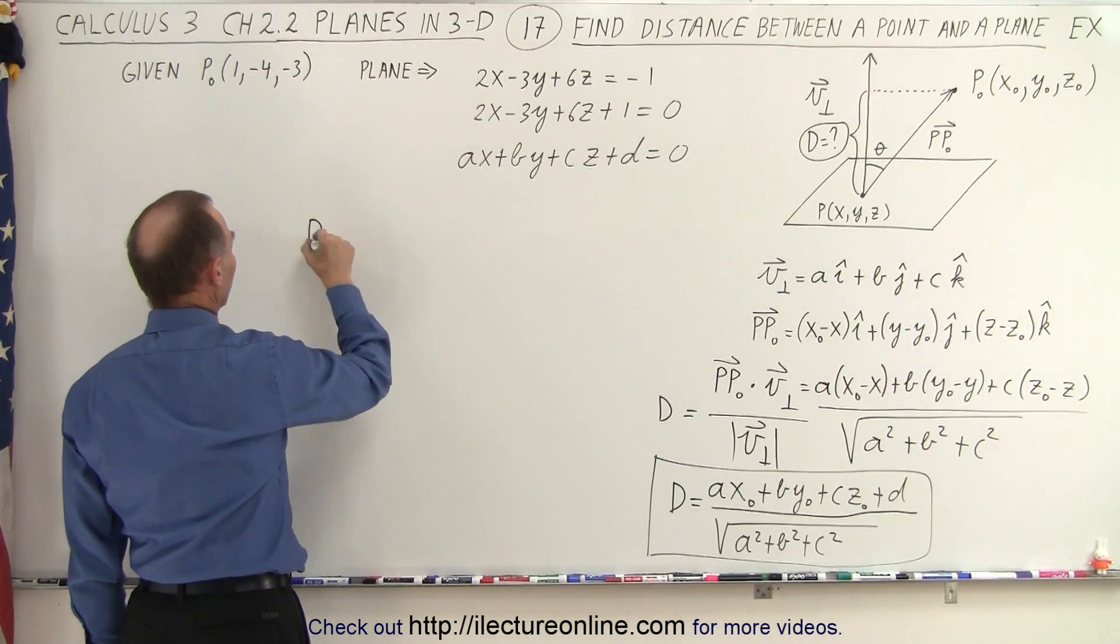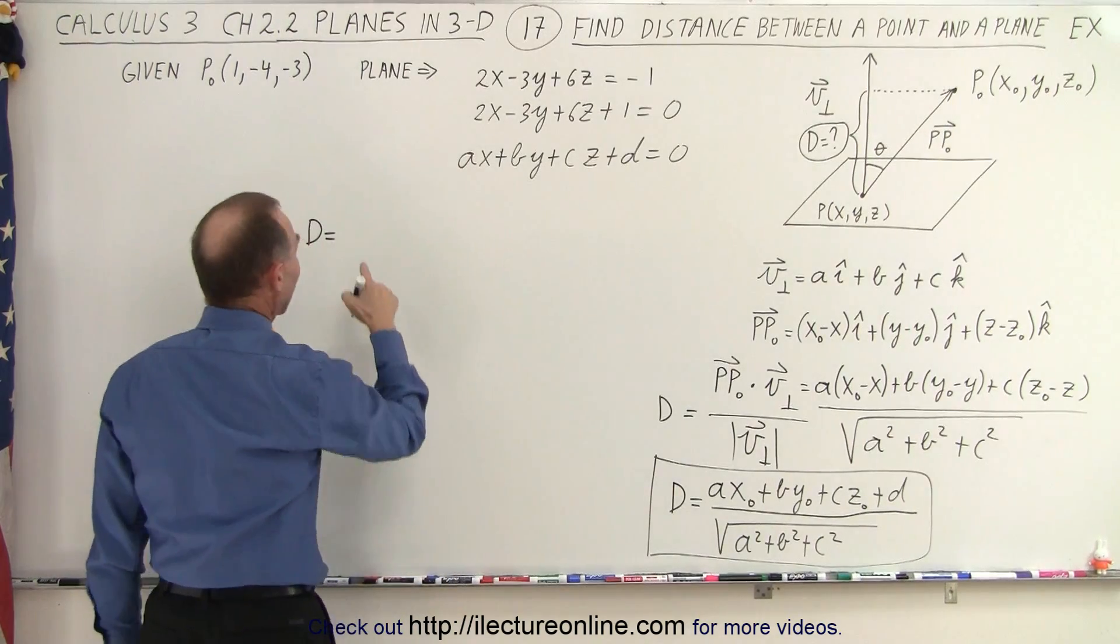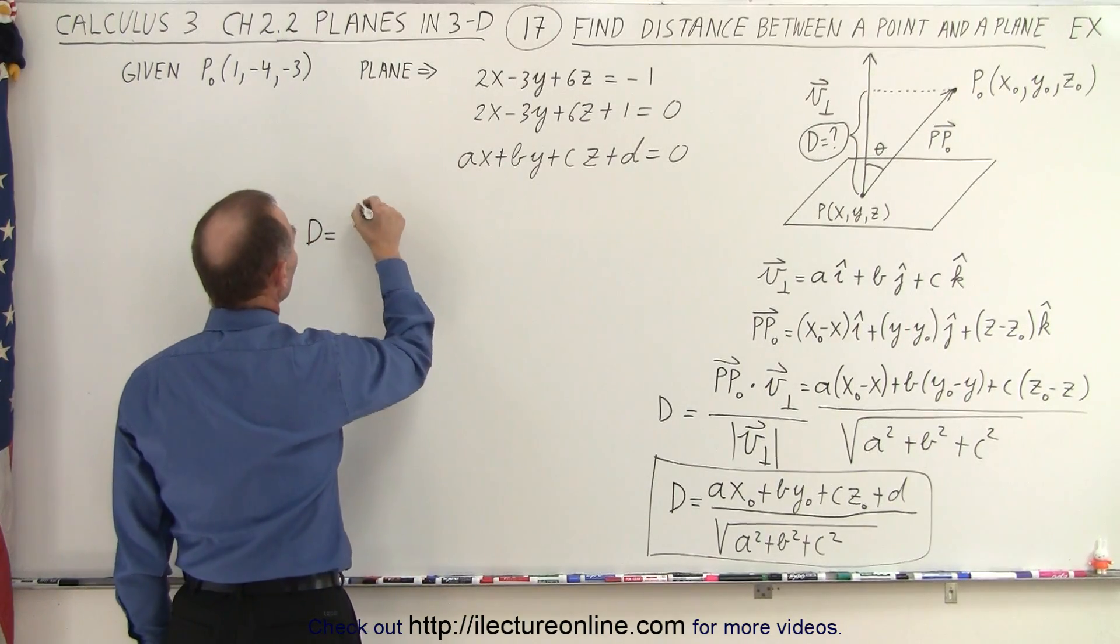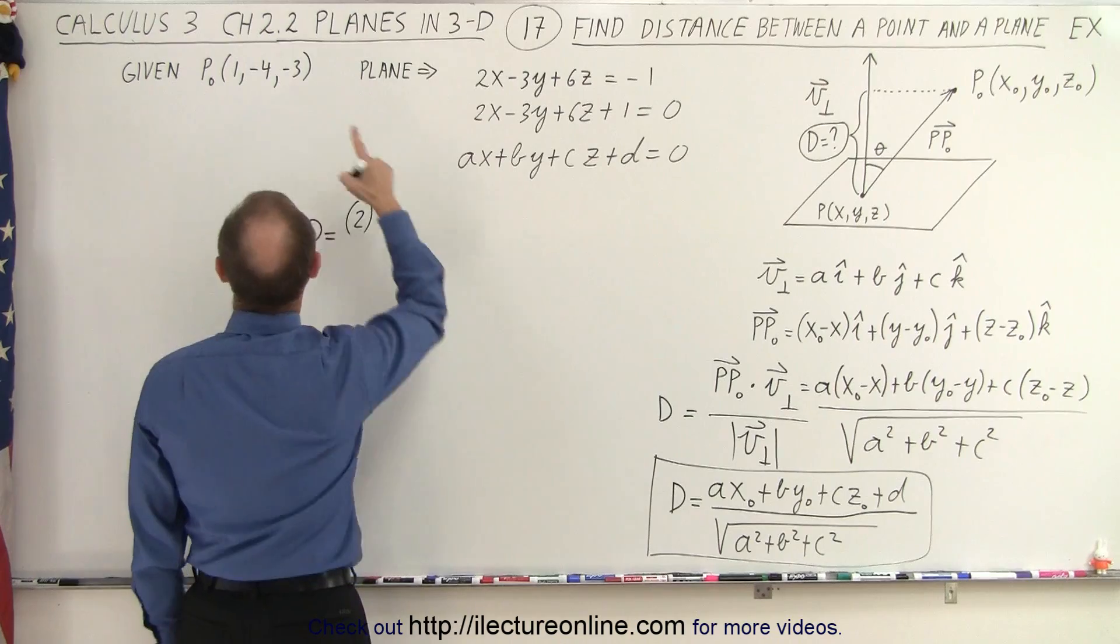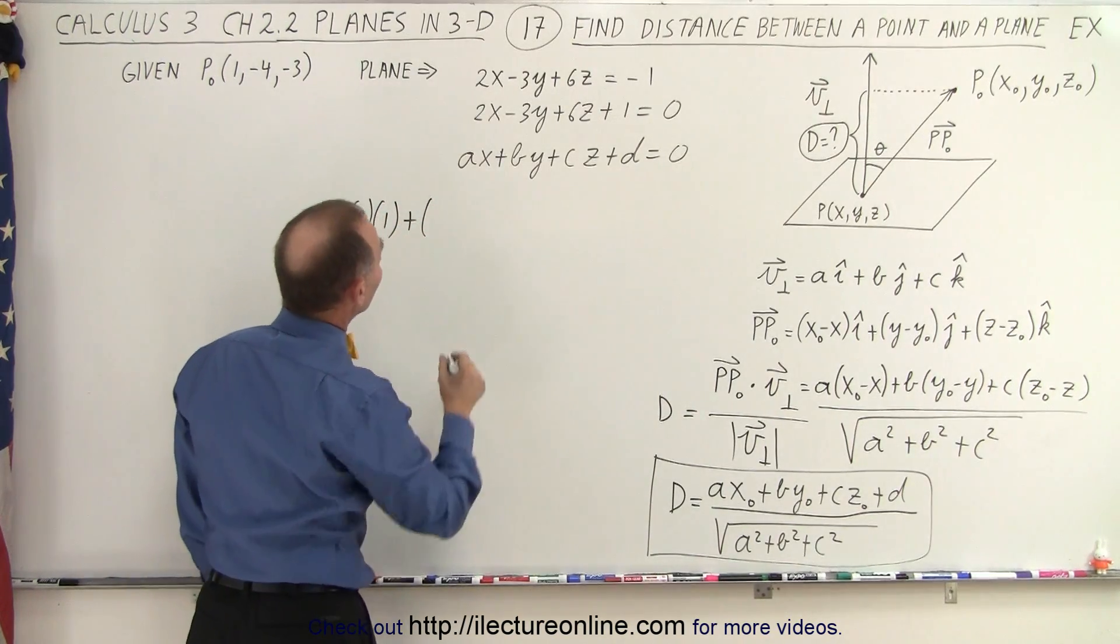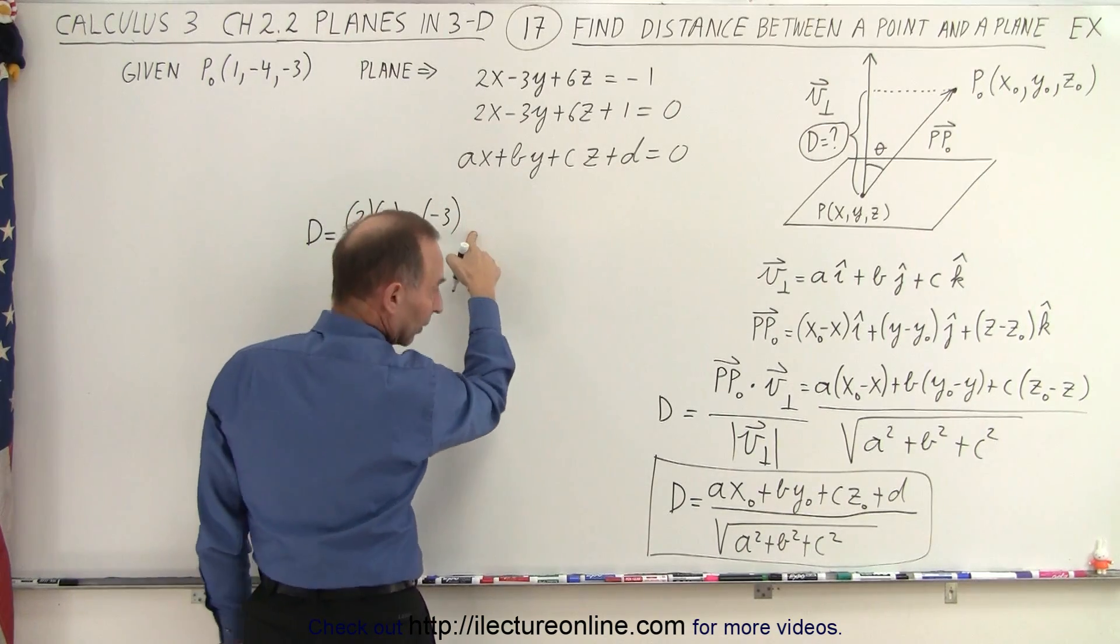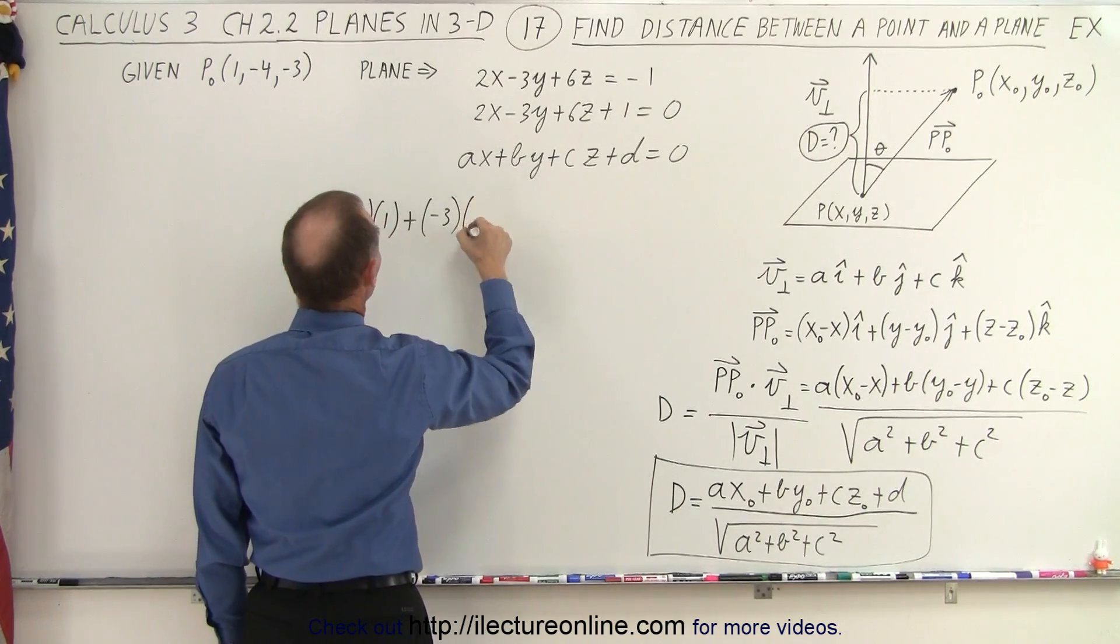So the distance between that point that's given and the plane defined by that equation is equal to a, which is 2, times x sub-naught, which is 1, plus b, in this case is minus 3, and y sub-naught, which is minus 4,